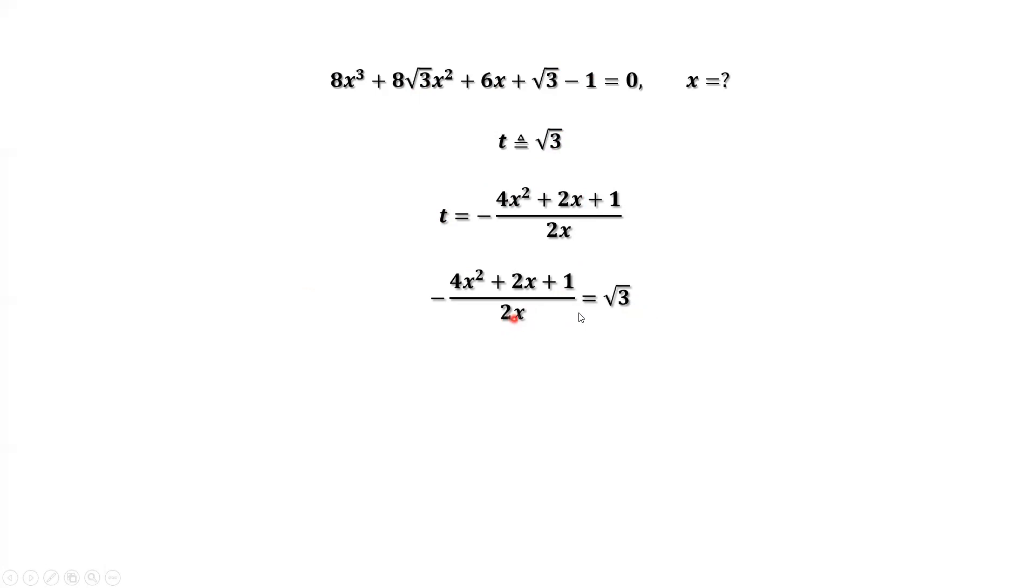Both sides time 2x first. Then simplify. We have a quadratic equation about x. 4 is a. 2 times 1 plus square root of 3 is b. c equals 1.